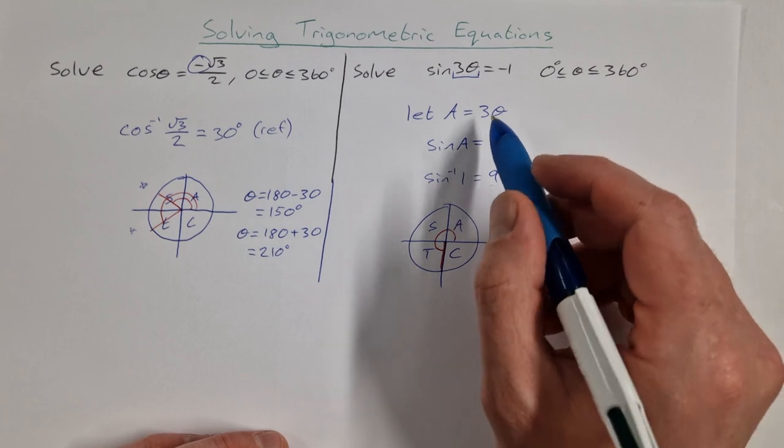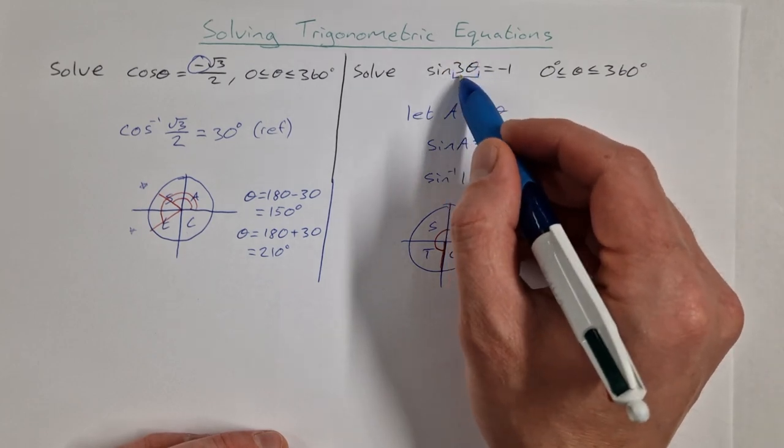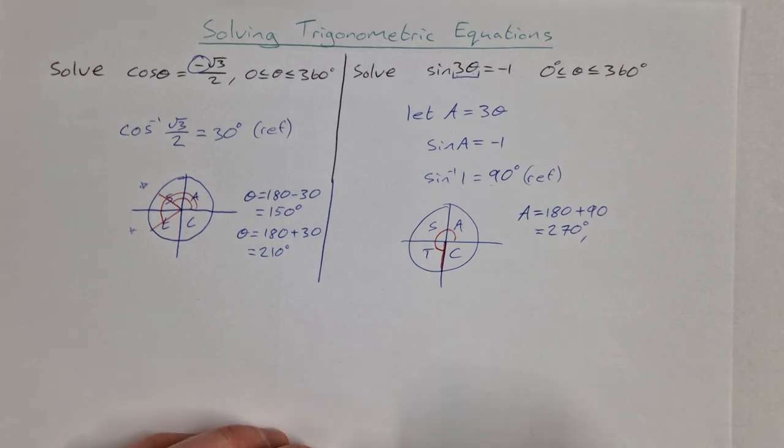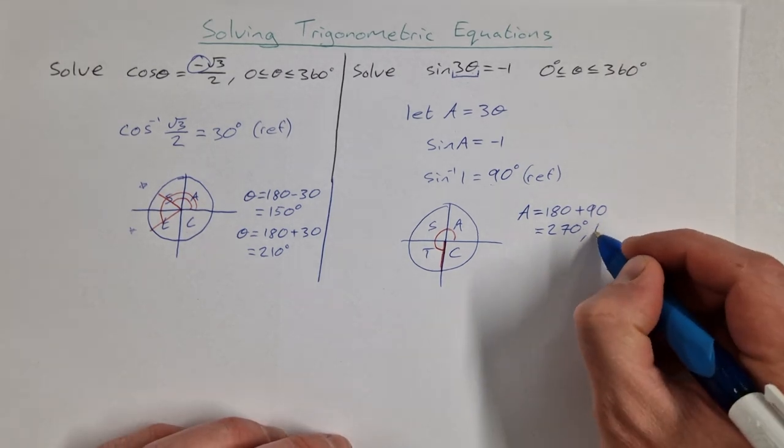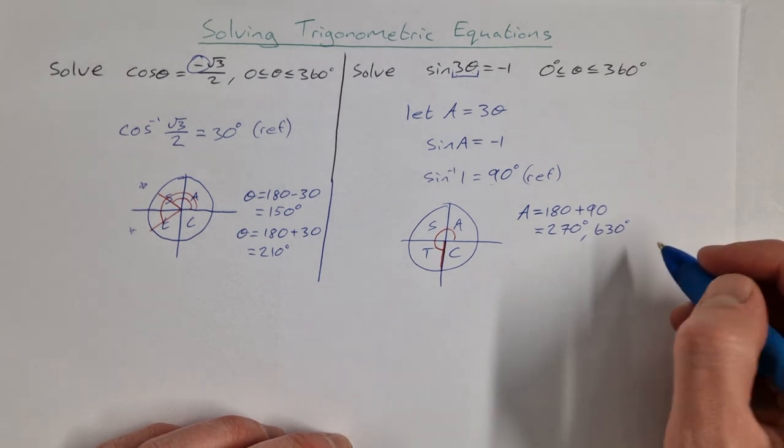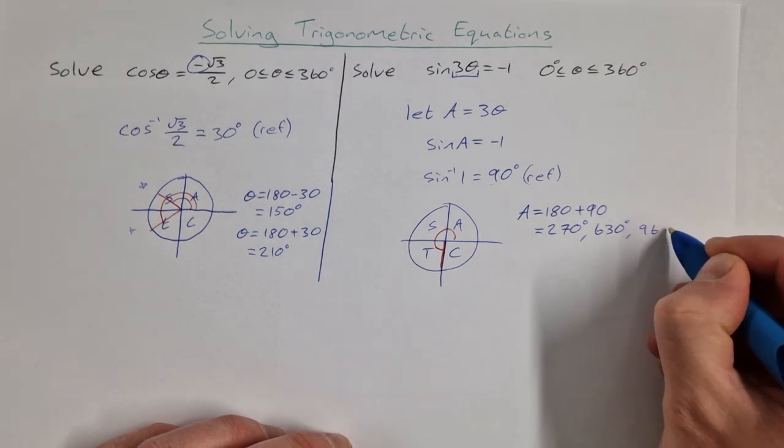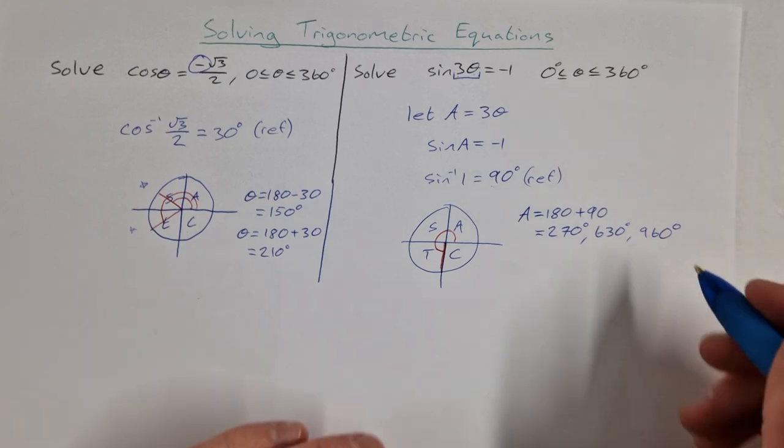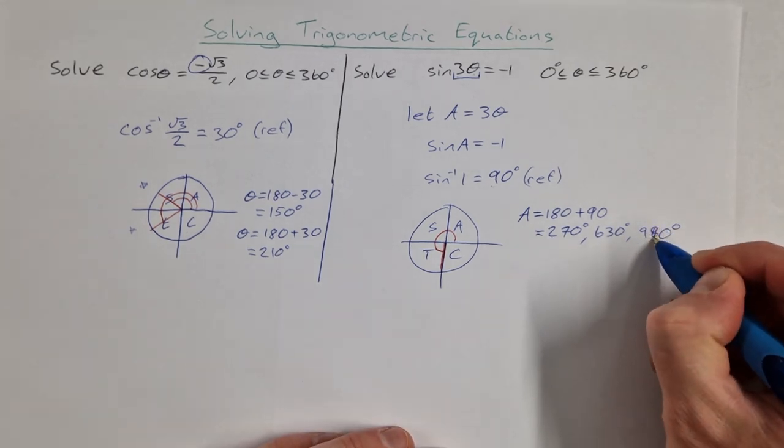But we still, we're going to have 3 revolutions because we have 3 theta. So it's going to be 270, then it's going to be 270 plus 360, which is 630, and then it's going to be plus another 360, which is 990, not 960, 990.